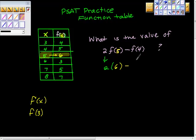Minus f(4). So we go to x is 4, and when x is 4, the value we get is 5. So minus 5 is equal to 2 times 6 is 12. 12 minus 5 is 7. The answer is 7.